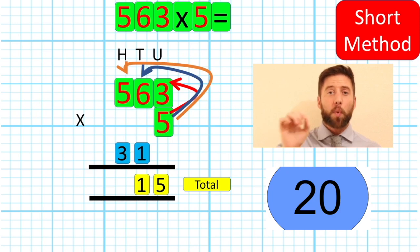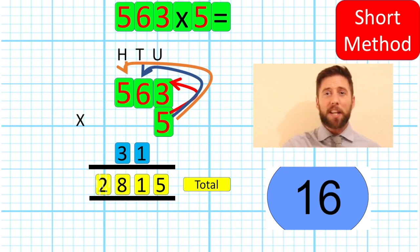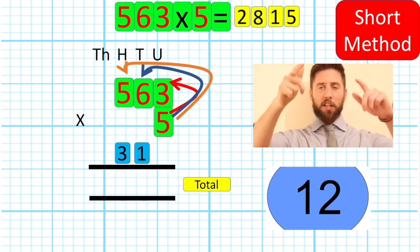5 times 5. 5 times 5 is 25. Add the 3 that I've carried over from my 10s column. 28 giving me a grand total of 2,815. With 10 seconds to go.